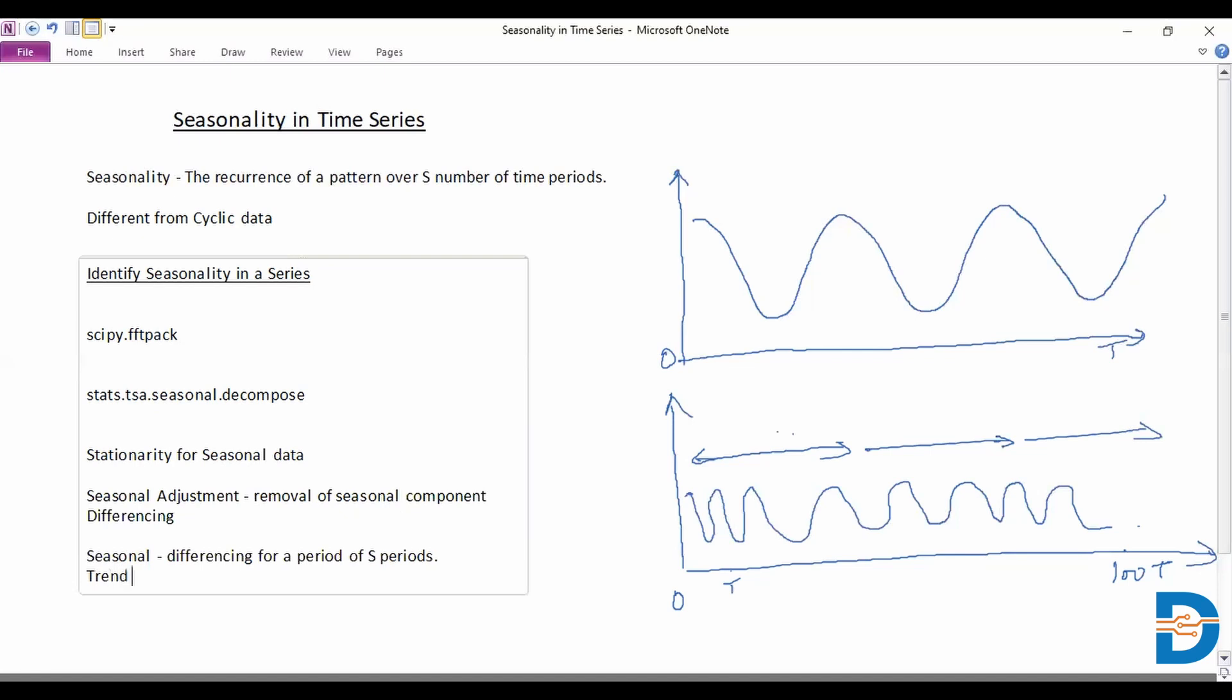However, if we have the trend that needs to be removed before that, that is something that we can say is removed prior to seasonal adjustment. In this case, our differencing is going to be a simple period of, or a single period, depending on the order of differencing. Let's say D is equal to one. Then we say differencing only for a single period. This is what will de-trend the data or get rid of the trend, following which we can do the seasonal adjustment.